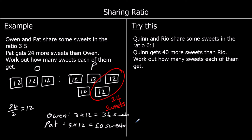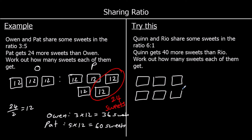OK, one for you to try — so give this a go. Quinn and Rio share some sweets in the ratio 6 to 1. So six boxes for Quinn and one for Rio.